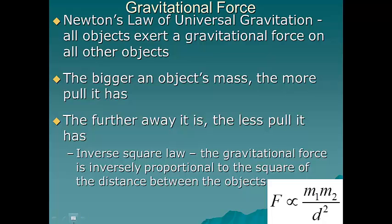This is known as the inverse square law. The gravitational force is inversely proportional to the square of the distance between two objects. So let's say at first objects are one meter away. They would exert some gravitational force on each other.